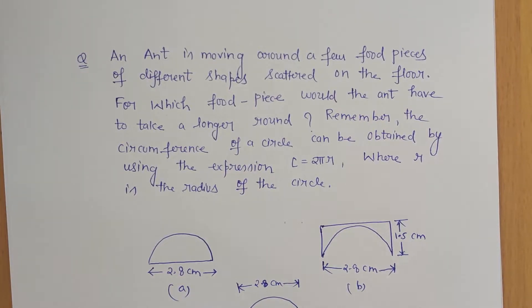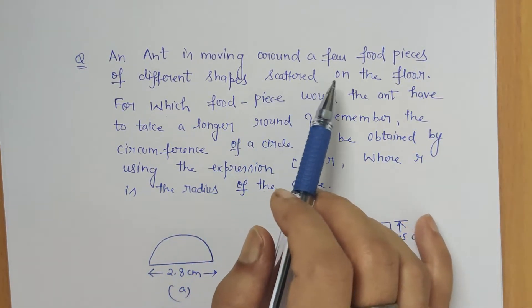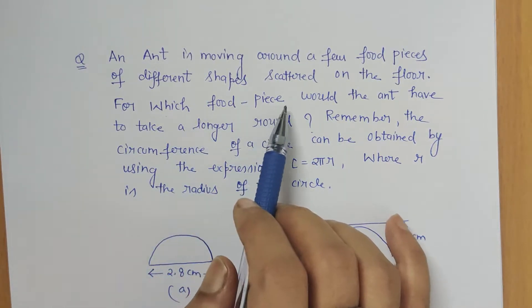Hello friends, this question I have taken from Class 8 Math NCERT. The question is: an ant is moving around a few food pieces of different shapes scattered on the floor. For which food piece would the ant have to take a longer round?